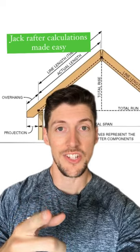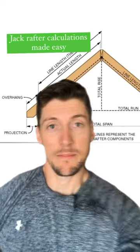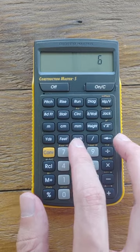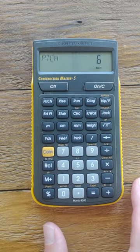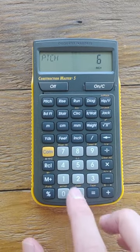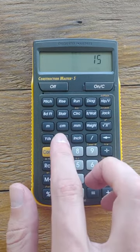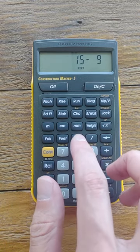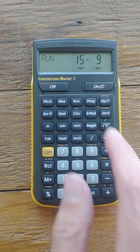How to make jackrafter calculations in just a few easy steps. First you input the pitch in inches and push the pitch key. Next you enter the length of your run and push the run key.